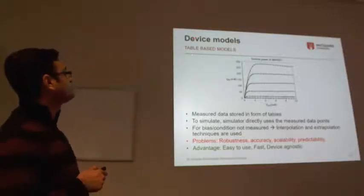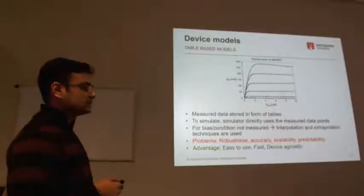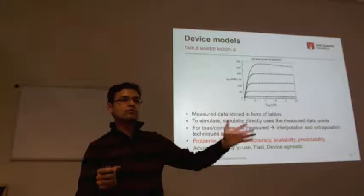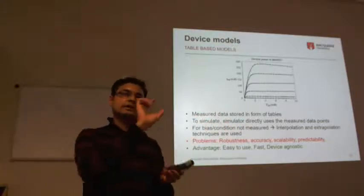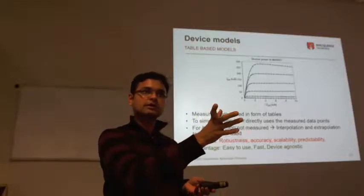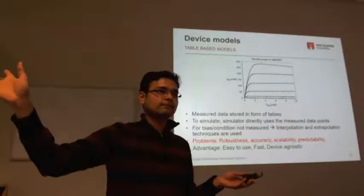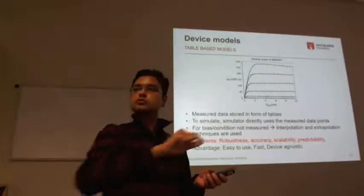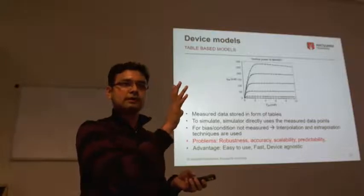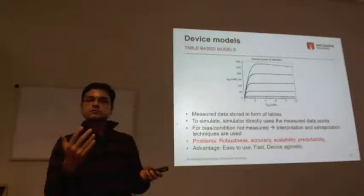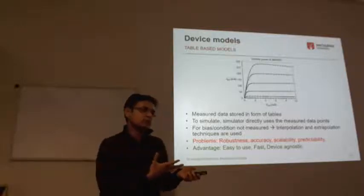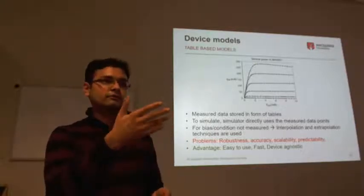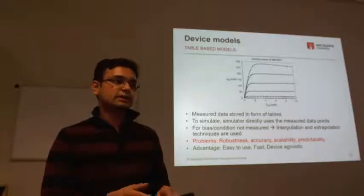Table-based or measurement-based models: you make the device, measure its characteristics, store the measured data in tables, and that's the model. Whenever the simulator needs a value - say current at VG = VD = 1 V - it reads from the table. This is very easy to build; you just measure and store data, and many simulators already support this type of model. But there are significant problems.